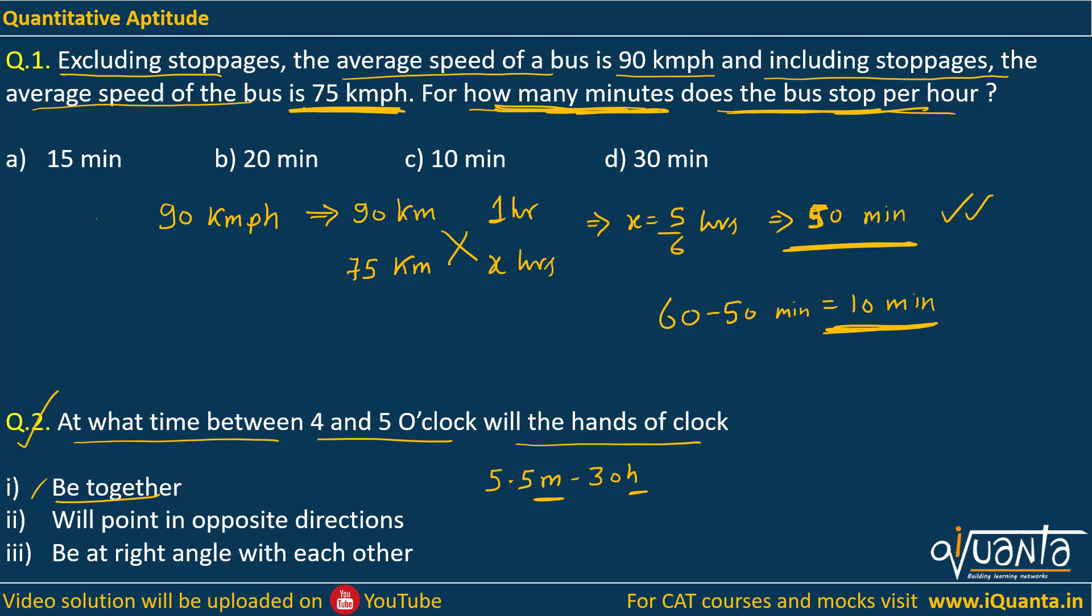For example, if someone asks you to find out the angle between hands of a clock at 2:30 PM, you will be putting m equal to 30, h equal to 2.